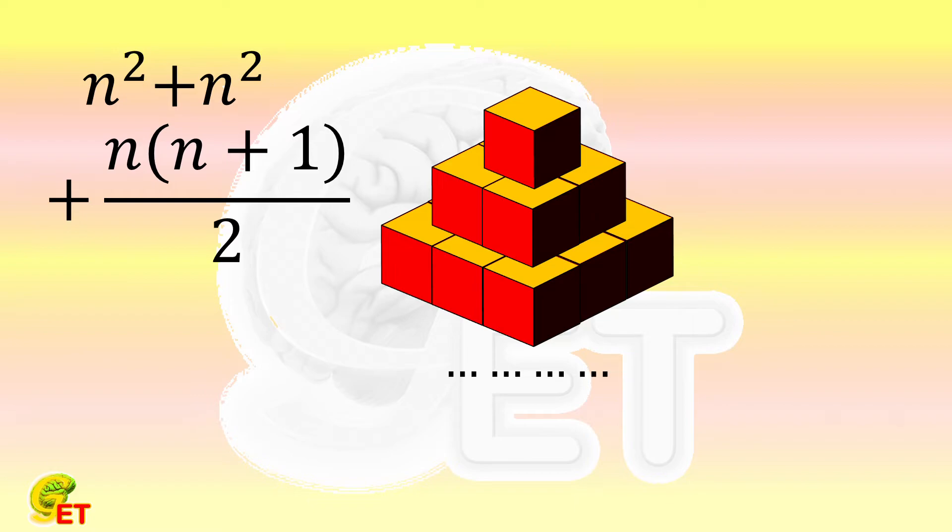Since there are 4 sides, so we multiply it by 4. To sort it out, it is 2 times square of n plus 2 times n.